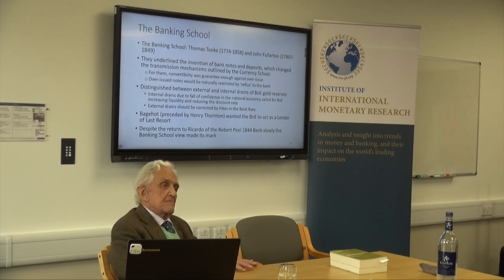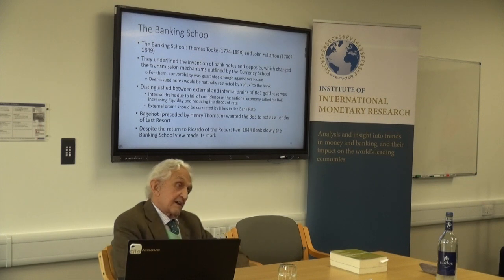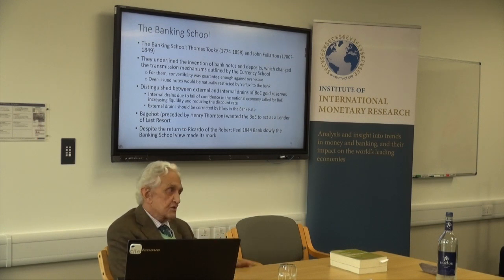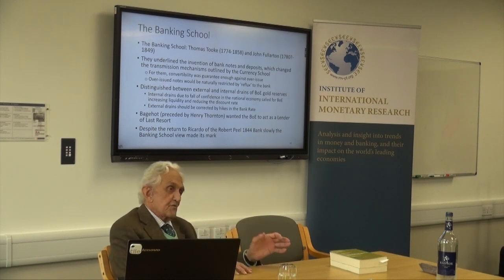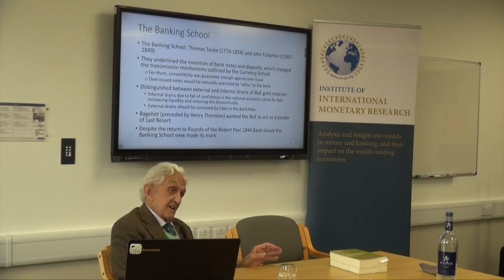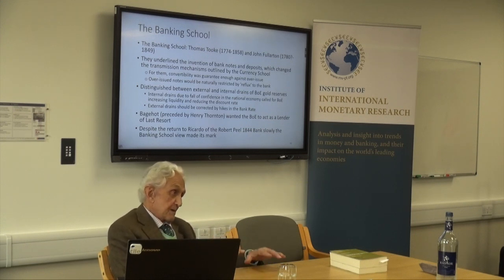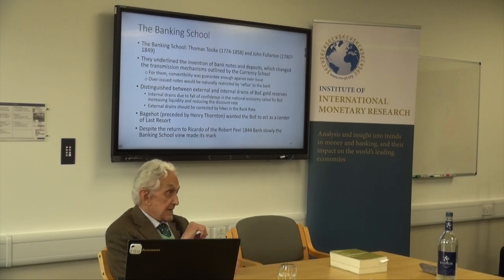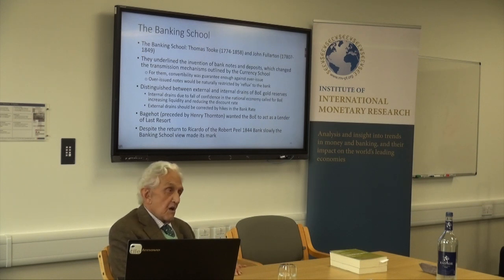The Banking School - economists critical of Ricardo and his disciples - studied what policy the central bank and Bank of England should follow. Thomas Tooke and John Fullarton underlined the invention of bank notes and bank deposits, which modify the functioning of the gold standard. It's not only coins and bullion that influence the price level, but also the fact that people had substituted bank credits and deposits for gold. The increase in bank credits and deposits had an influence on how the gold standard functioned.